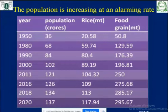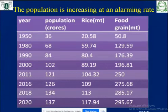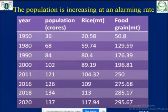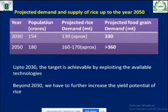The main concern is that population is increasing at an alarming rate. During our independence in the 1950s, the population was 36 crore, and now by 2020 it is nearing 137 crores. By 1950 we were in a begging-and-borrowing situation, producing only 50 million tons of food grain — rice was around 20.5 million tons. By 2020, rice production has reached 217.94 million tons and food grain production is around 295.67 million tons.